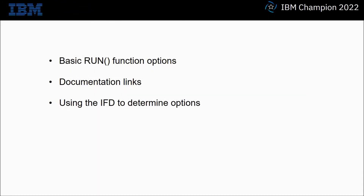For this practical how-to video I'm going to be going through some of the options that you can use with a basic run function. I'm going to point you to the documentation links where you can read up on further options, and finally I'm going to show you how to use the Integration Flow Designer tool to determine which options you should use by making those choices with a GUI and then seeing what choices those lead to at the command line.